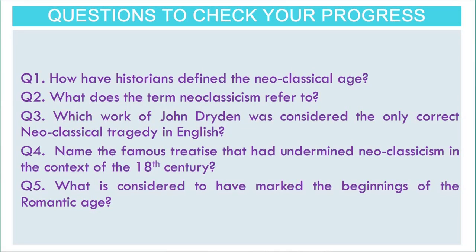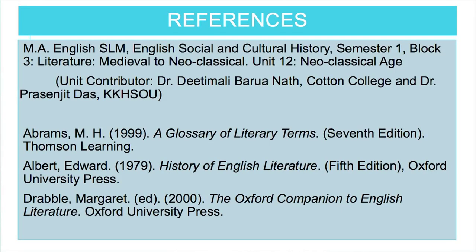Here are the questions to check your progress. Question one: How have historians defined the Neoclassical Age? Question two: What does the term Neoclassicism refer to? Question three: Which work of John Dryden was considered the only correct neoclassical tragedy in English? Question four: Name the famous treatise that had undermined neoclassicism in the context of the 18th century. Question five: What is considered to have marked the beginnings of the Romantic Age? You are advised to go through the reference to the SLM, MA English Semester 1, titled English Social and Cultural History. Thank you, dear learners.